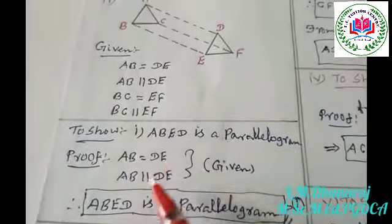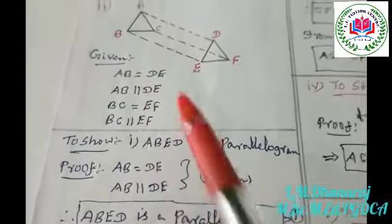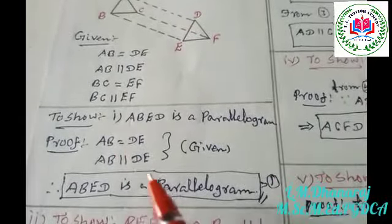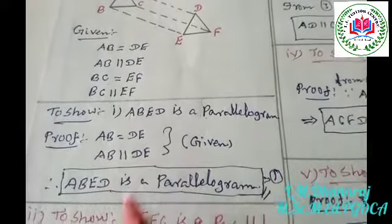The first subdivision is to show that ABED is a parallelogram. For the parallelogram condition: AB is equal to DE, and AB is parallel to ED — one pair of sides is both equal and parallel, which is sufficient to prove ABED is a parallelogram.